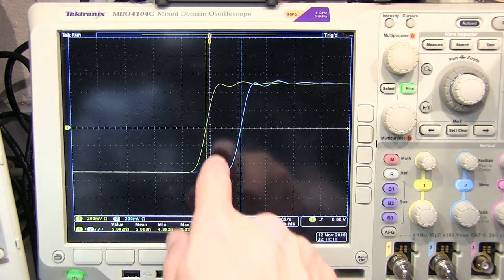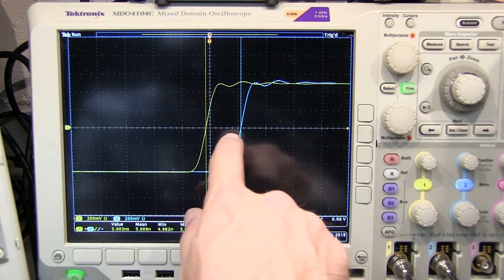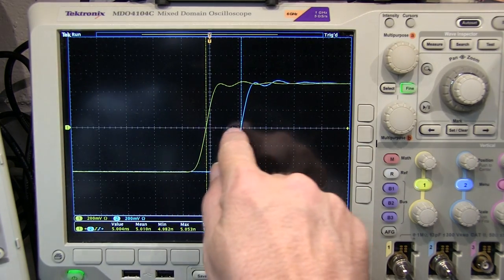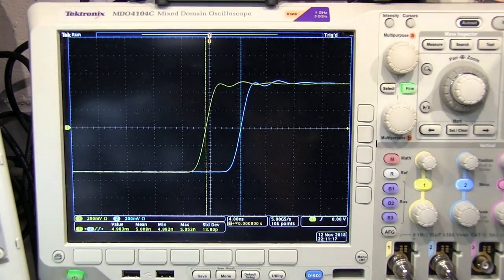And if we turn the measurement indicators on, we can see that by default those measurements are made at the 50% point, or the crossing point, of each of those signals.